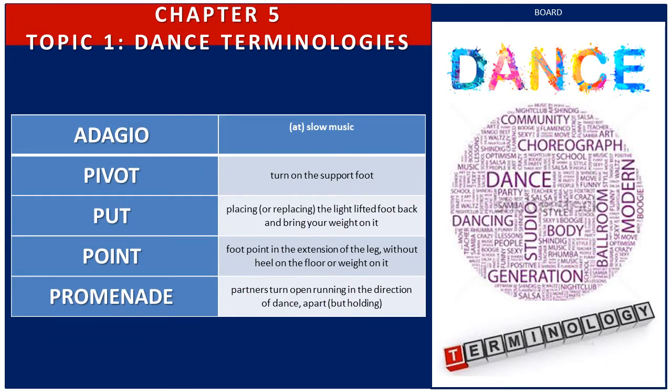Let me give you some examples of terminologies. We have adagio, which means slow music. Pivot means to turn on the support foot. Foot means placing or replacing the light-lifted foot back and bringing your weight on it. Point means the foot pointed in the extension of the leg without heel on the floor or weight on it. Promenade means partners turn open, running in the direction of dance, apart but holding.